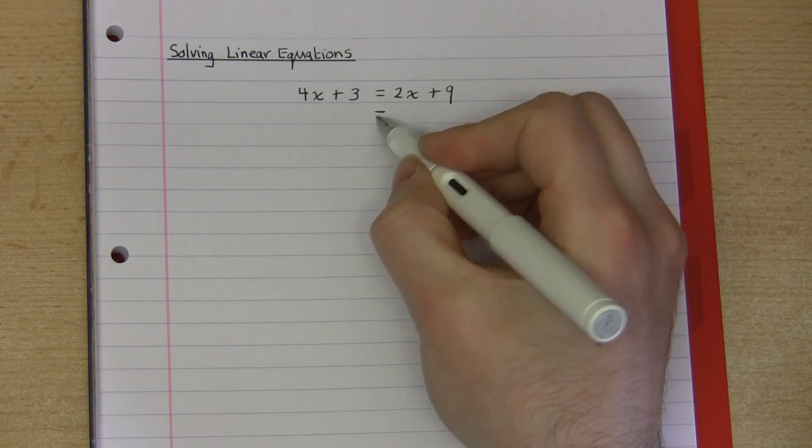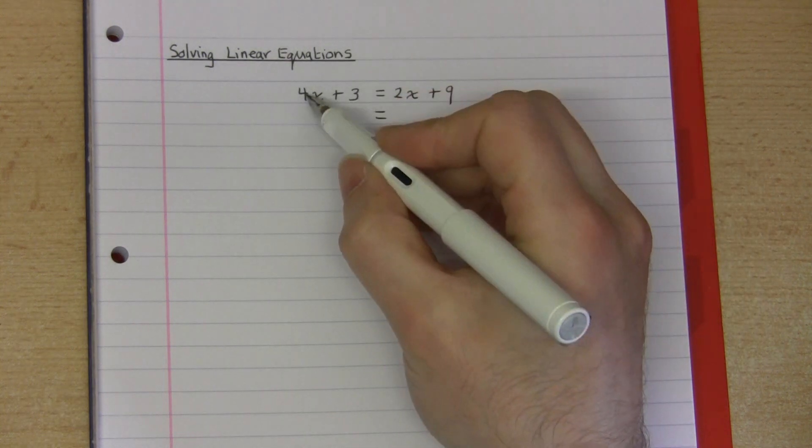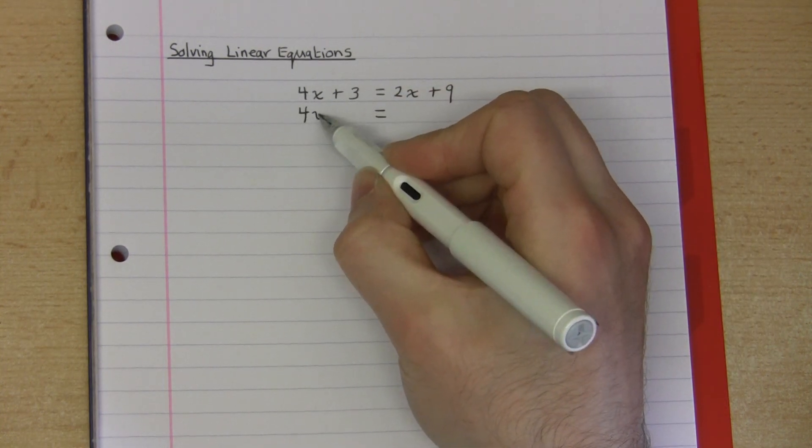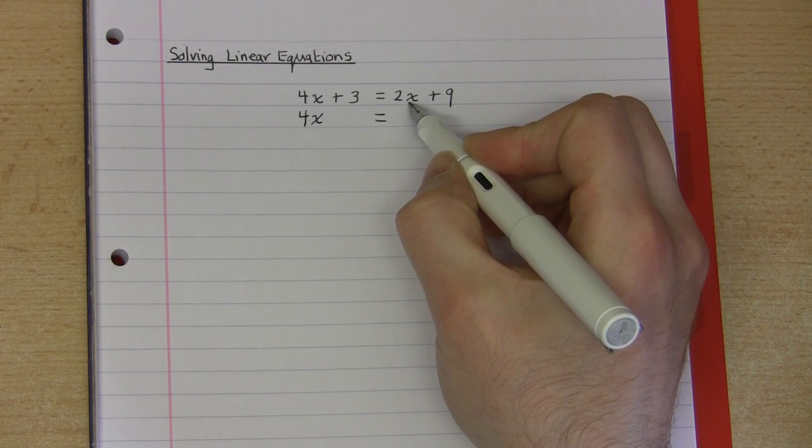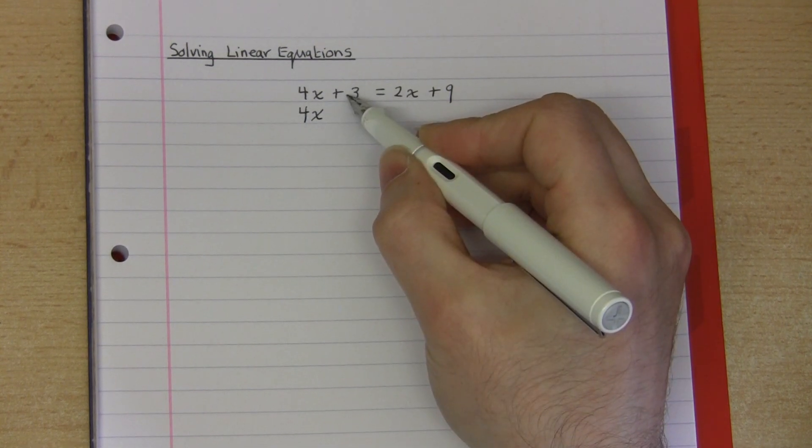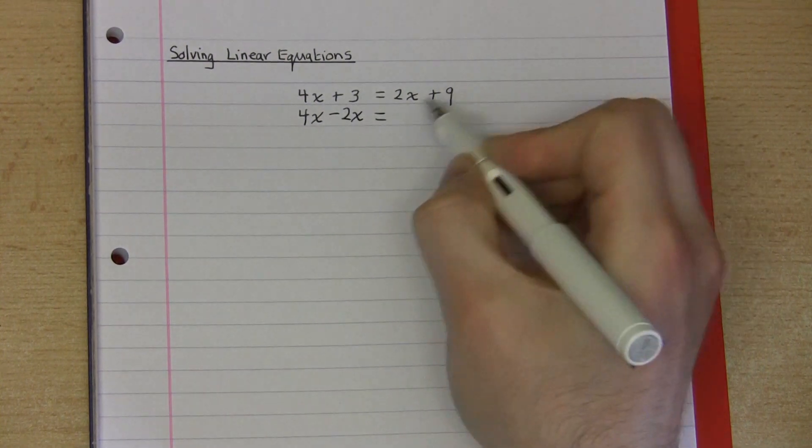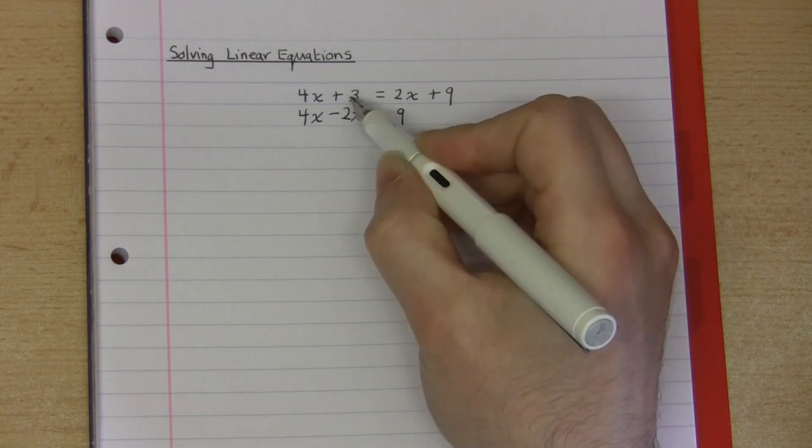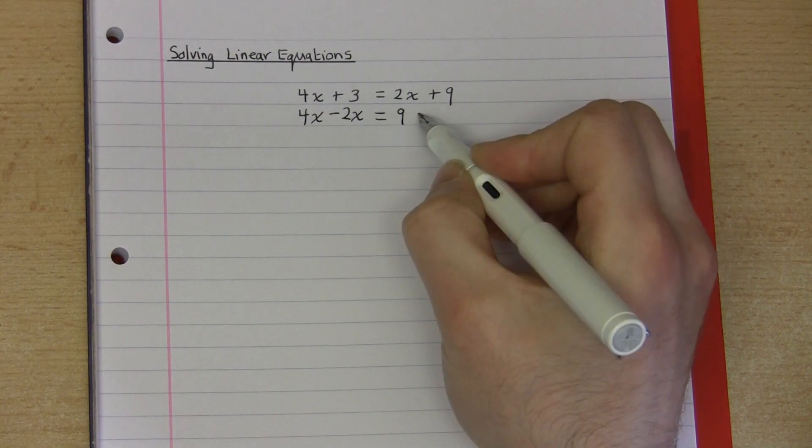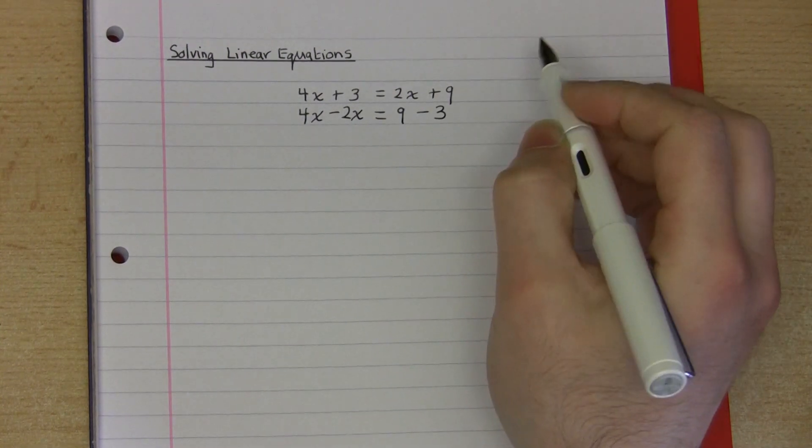So here starting a new equation, I may want to keep the 4x on the left hand side, jump the 2x from the right to the left so that its sign changes and it becomes negative 2x, keep the 9 on the right hand side and jump the plus 3 to be negative 3 on the right hand side.